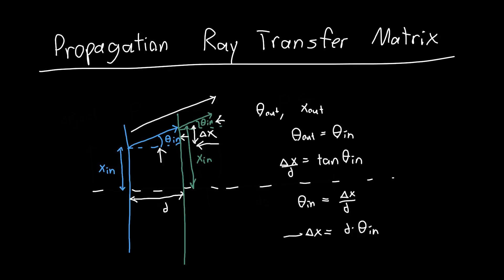But we're not interested in delta x. We're interested in x out. Well, we can just see that x out is just x in plus delta x. That was sort of how we defined delta x. Sorry, I appear to have mislabeled this. This x in should actually be x out. So x out is just equal to x in plus delta x or x in plus d times theta in.